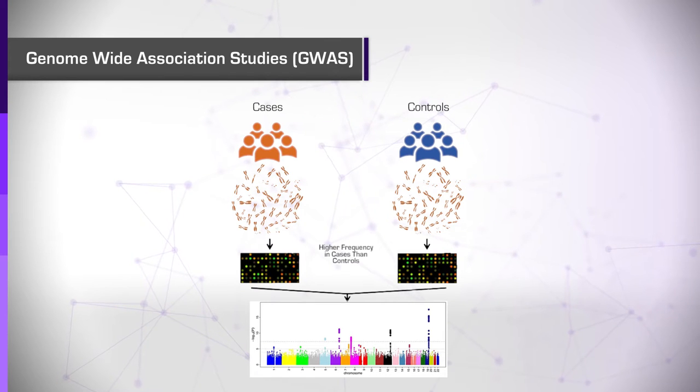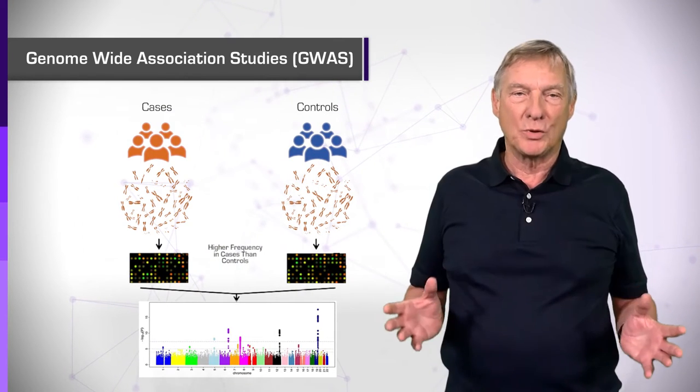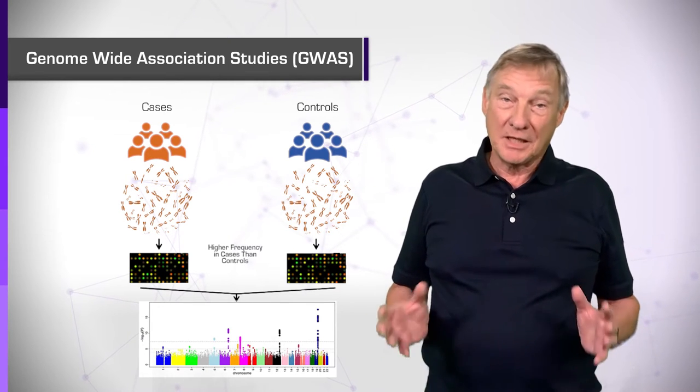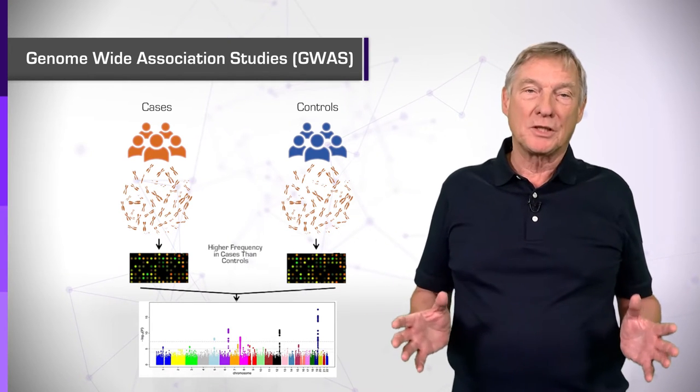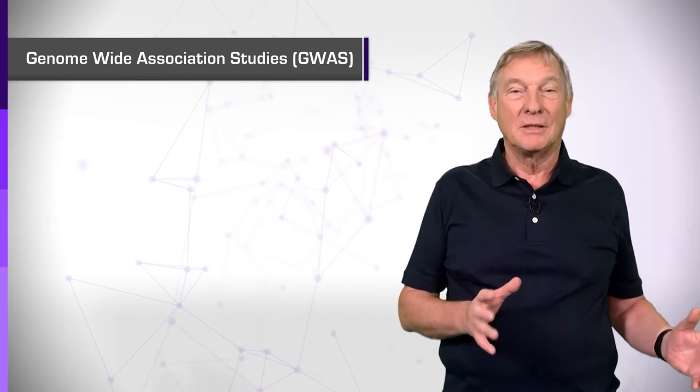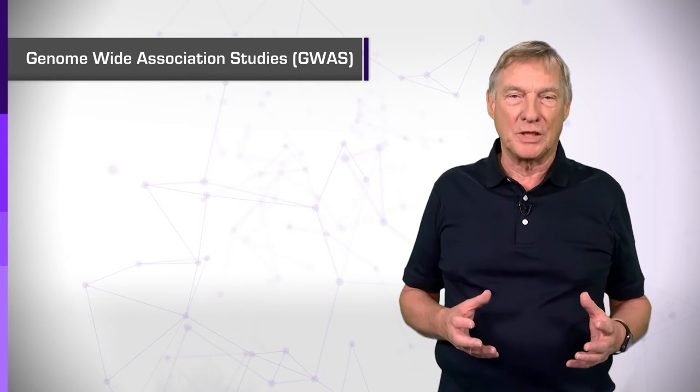Current technology allows the status of about a million or more SNPs in each individual to be determined in this way, but that is much smaller than the total of about 40 million SNPs in the human population. Nevertheless, because of a correlation between the presence of neighbouring SNPs, termed linkage disequilibrium, it is possible to use imputation methods based on a sample of a million to determine the status of a large fraction of all SNPs.